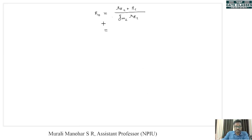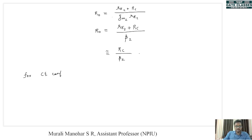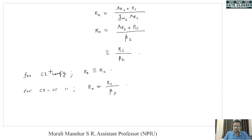Since gm2·Rπ2 = β2, Rout = (Rπ2 + RC) / β2. Since Rπ2 is very much less than RC, we approximate this to RC/β2. For a common emitter configuration alone, Rout = RC. For CE-CC, Rout = RC/β2, which is a lot smaller. This is the advantage of using a common collector configuration in cascade with common emitter — we have reduced the output impedance.